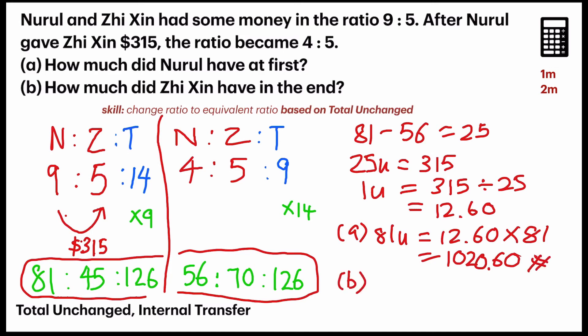Now, B. How much money did Jixing have in the end? So, we go to the end ratio. Jixing. Don't look at the old ratio. Look at the new one, which is 70. So, 70 units is equal to $12.60 times 70. Gives me $882. And that's my final answer. Do you get this correct?